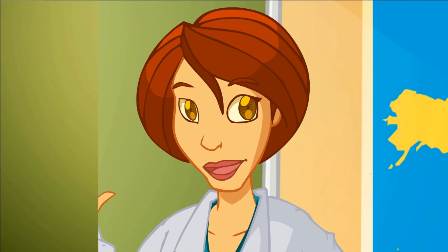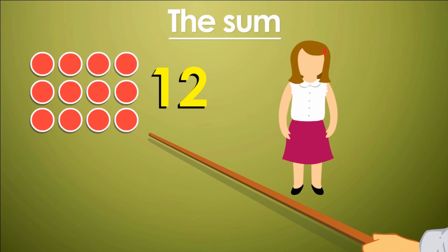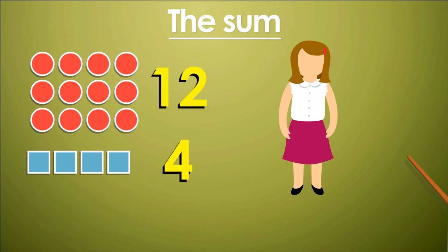Now, I'm going to write another problem. Anna collected 12 round labels and 4 square ones. How many labels has she got all together?